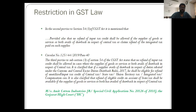However, there is a catch: a supplier availing drawback only with respect to basic customs duty under the Customs and Central Excise Duty Drawback Rules 2017 shall be eligible for the refund of unutilized ITC of GST — commonly known as the lower rate of drawback. Circular 37/2018 dated 15th March 2018, para 2.1, further clarified that refund of eligible credit on account of state tax shall be available even if the supplier has availed drawback in respect of central tax and customs duty — the higher rate of duty drawback.